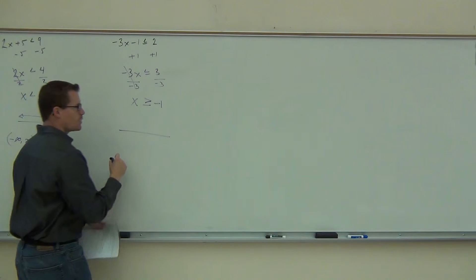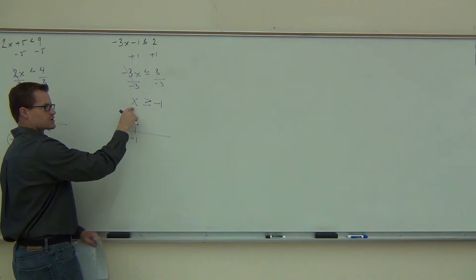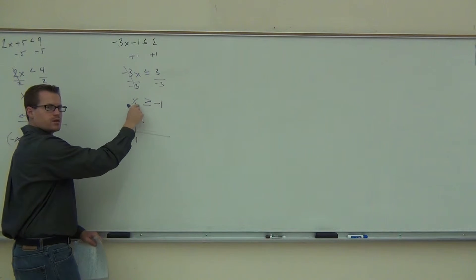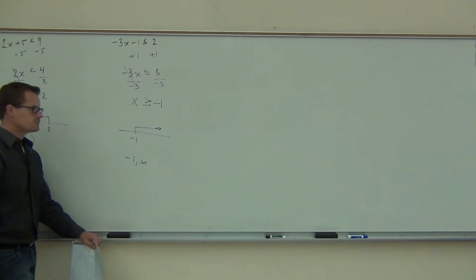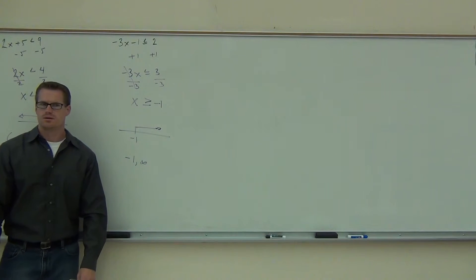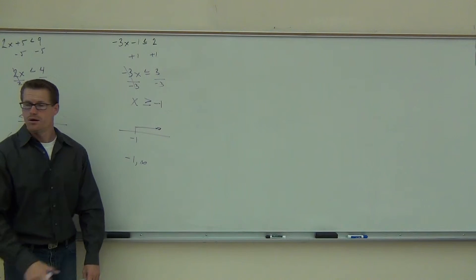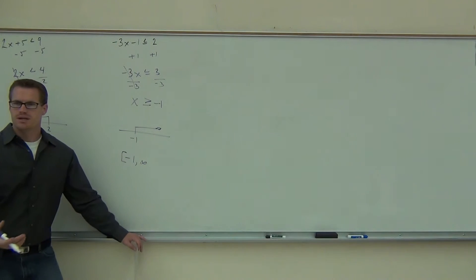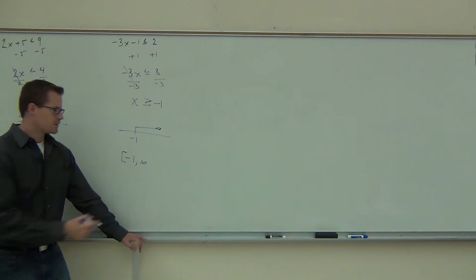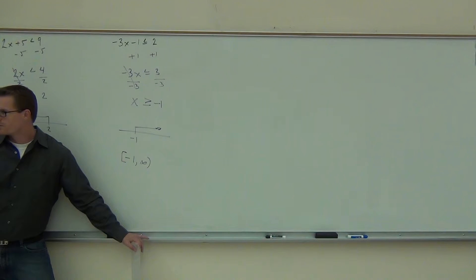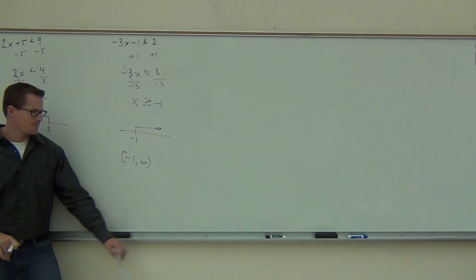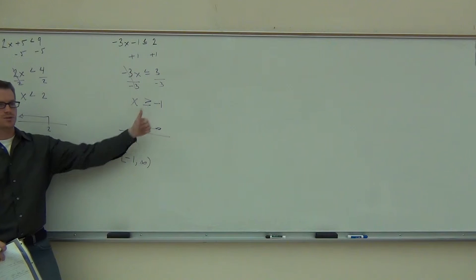Now we can graph the same way. We have negative 1. Our arrow, since x on the left-hand side is pointing to the right, we're talking about numbers bigger than a certain number — bigger than means to the right. We'll do our interval notation: negative 1 to infinity. Brackets or parentheses? The bracket goes on negative 1 because of the equal sign. Infinity always requires a parenthesis — you don't know what infinity is, so you can't put a bracket around it. Brackets are for values that include an equal sign.